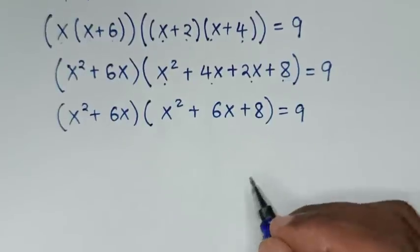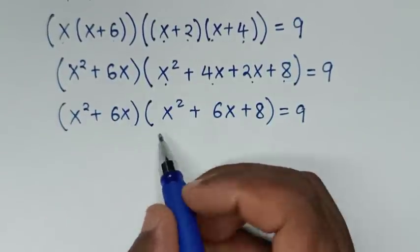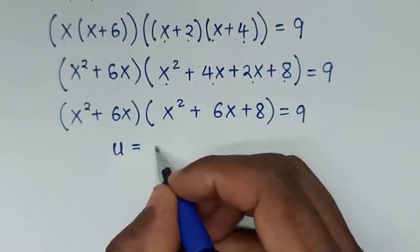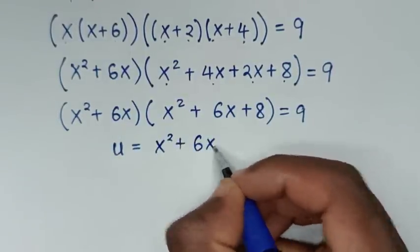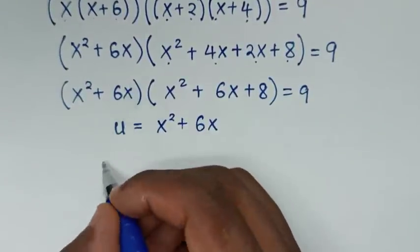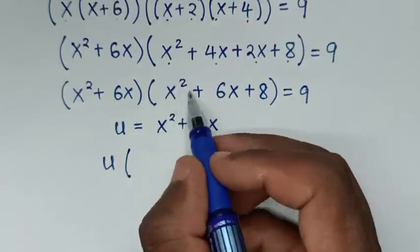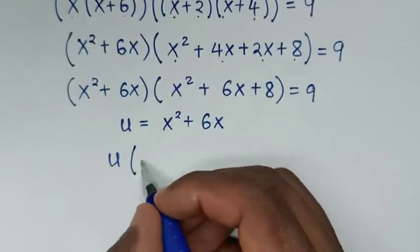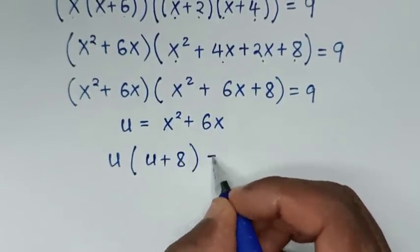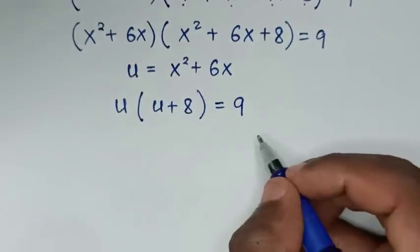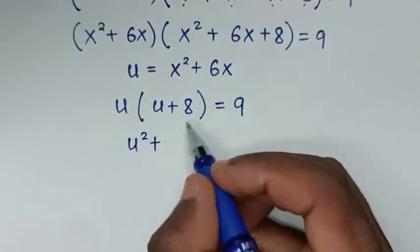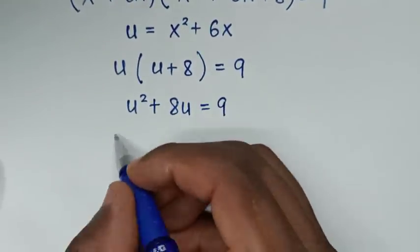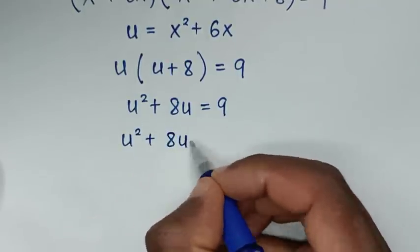Now we notice x²+6x appears in both factors, so we let u = x²+6x. Substituting, the first factor becomes u and the second becomes u+8, giving u(u+8) = 9. Expanding: u²+8u = 9.